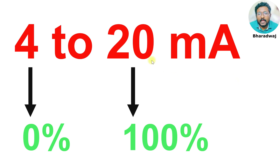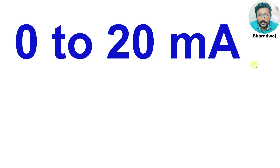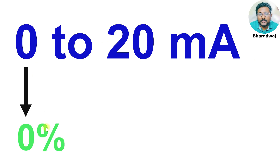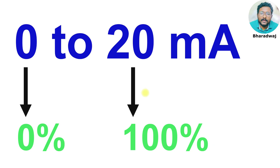Now I will assume 0 to 20 mA as the range instead of 4 to 20. The zero represents 0% of the process variable or zero scale, and 20 represents the full scale value, which is 100% of the process variable.